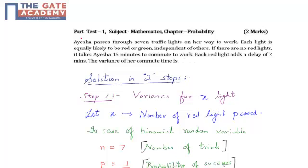Hello students, the following question is from Part Test 1, Subject Mathematics, Chapter Probability. This is a two-mark question that states: Ayesha passes through seven traffic lights on her way to work. Each light is equally likely to be red or green, independent of others.